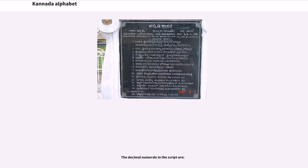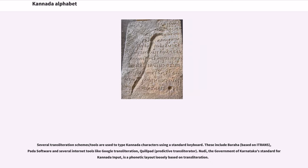The formations shown in boldface are seldom used in the normal course of the language. The decimal numerals in the script are also defined. Several transliteration schemes and tools are used to type Kannada characters using a standard keyboard. These include Baraha, Pata software, and several internet tools like Google Transliteration and Quillpad. Nudi, the government of Karnataka's standard for Kannada input, is a phonetic layout loosely based on transliteration.